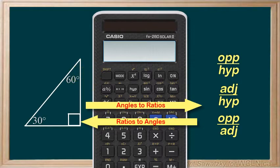If we're given an angle and we need to determine the trig ratio, we use the trig buttons. If we're given a trig ratio and we need to determine the angle, then we use the inverse trig buttons.